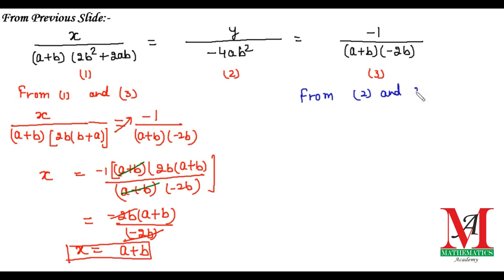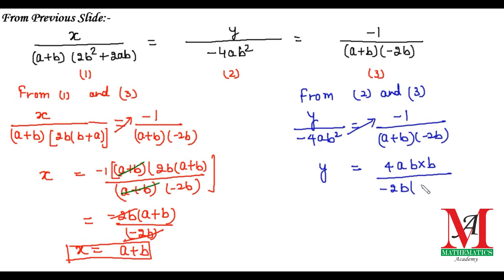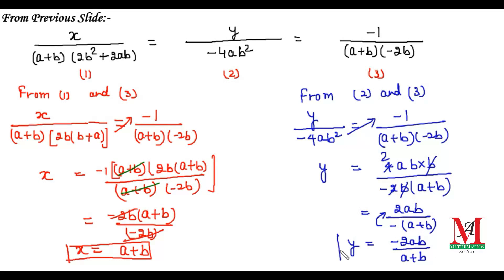To find y, we take portions two and three: y over −4ab² equals minus 1 over (a + b)(−2b). On cross multiplication: y = (−1 × −4ab²) / [(a + b)(−2b)] = 4ab² / [−2b(a + b)]. Here b cancels with b² leaving b, and 2 cancels with 4 leaving 2. Shifting the minus to the numerator, the value of y is −2ab / (a + b).